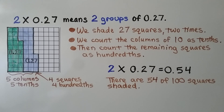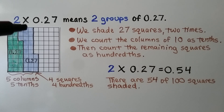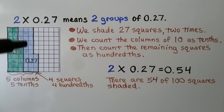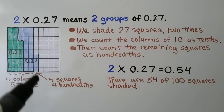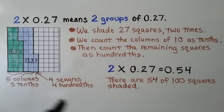Two times twenty-seven-hundredths means two groups of twenty-seven-hundredths. We shade twenty-seven squares two times. We count the columns of ten as tenths — one, two, three, four, five — then count the remaining squares as hundredths, and there are four. So it's equal to fifty-four hundredths: five-tenths and four-hundredths, with fifty-four of one-hundred squares shaded.